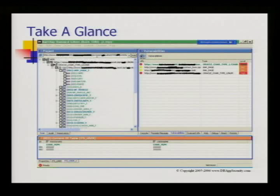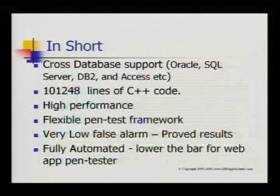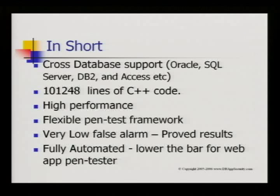Here's a quick look at how the tool looks, but I'll show you a flash demo very soon. On the left side you can see the web URL, Oracle detected in the back-end automatically, the SQL injection type, tables belonging to the web user, columns, and even the contents. The right side is the vulnerability report. In short, this is a cross-database pen test tool with a hundred thousand lines of C++ code — high performance, flexible, and extendable. Very low false alarm, because if you've already gained all the data, is it still a false alarm?